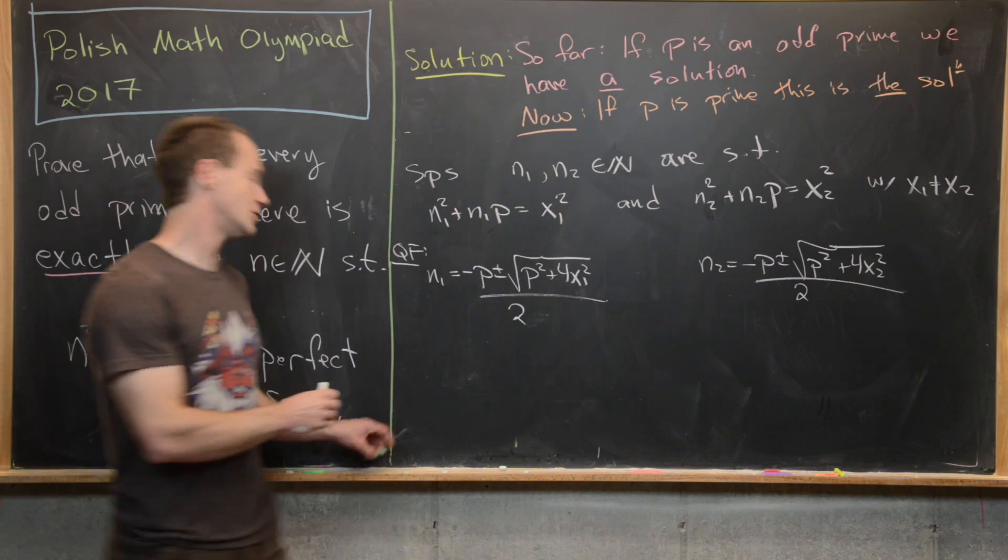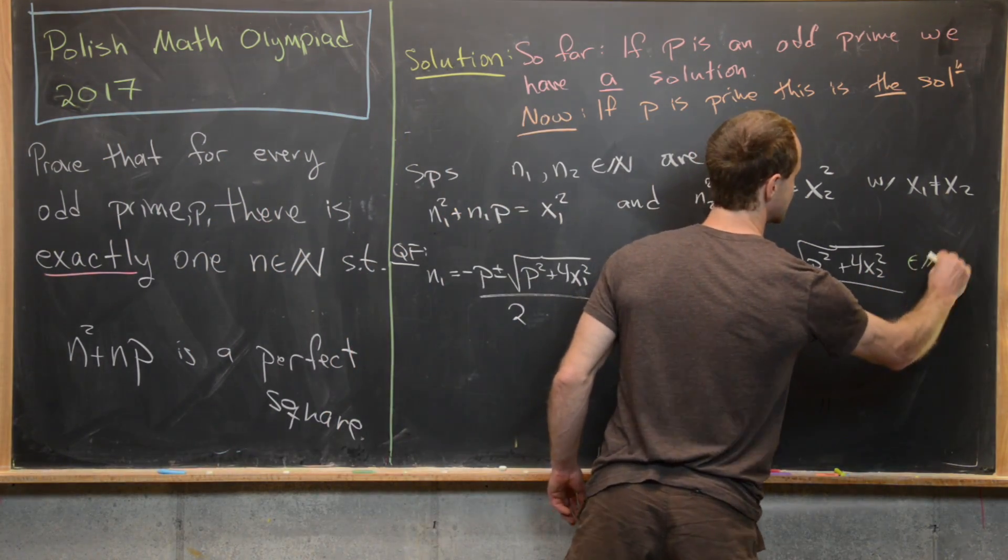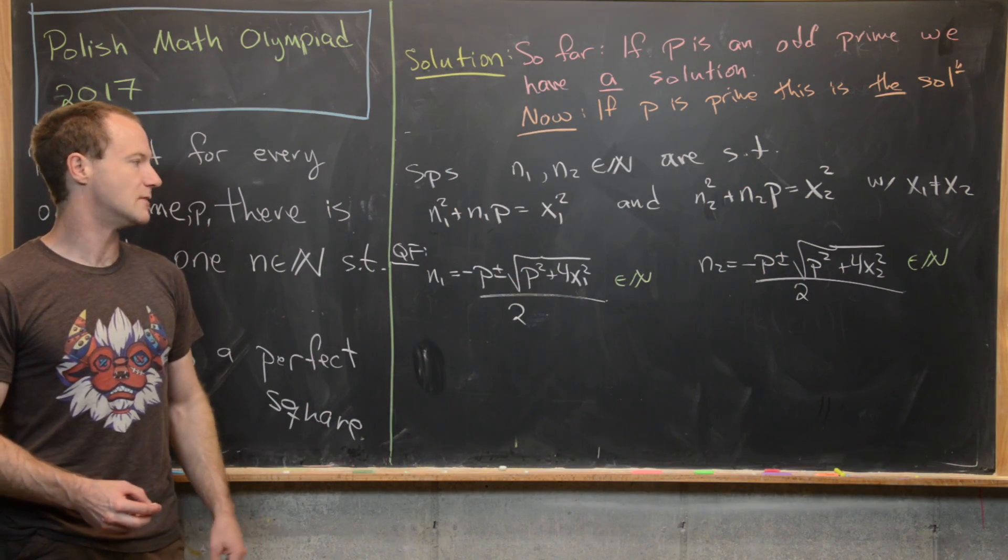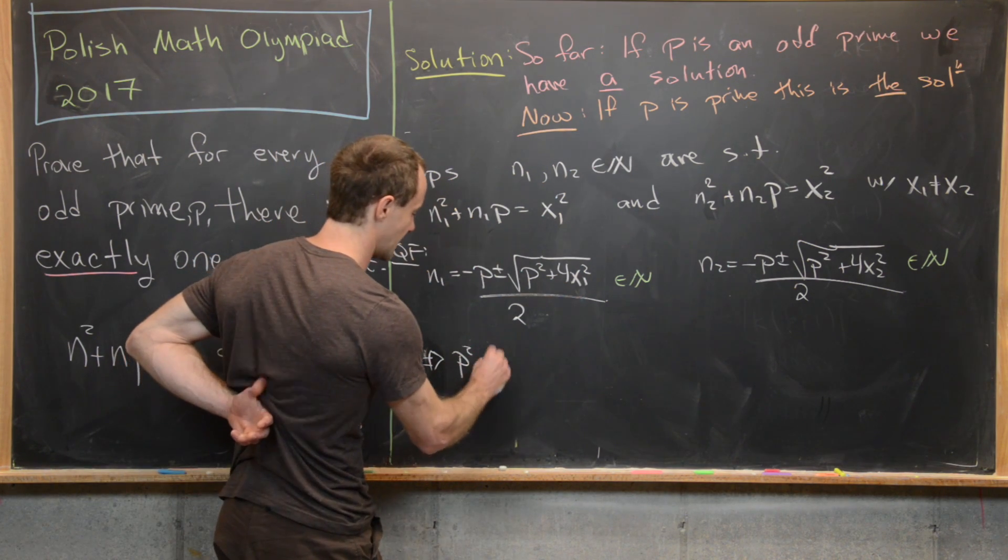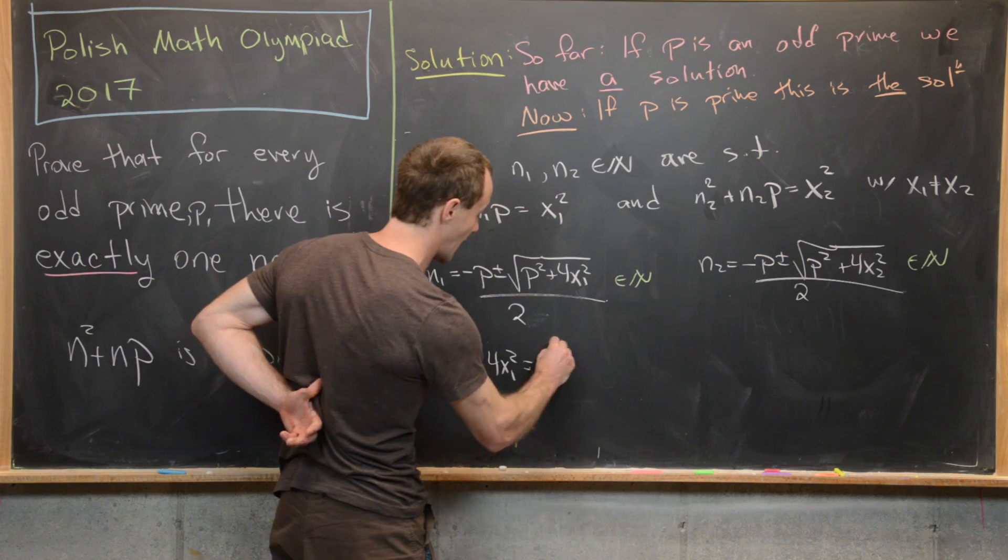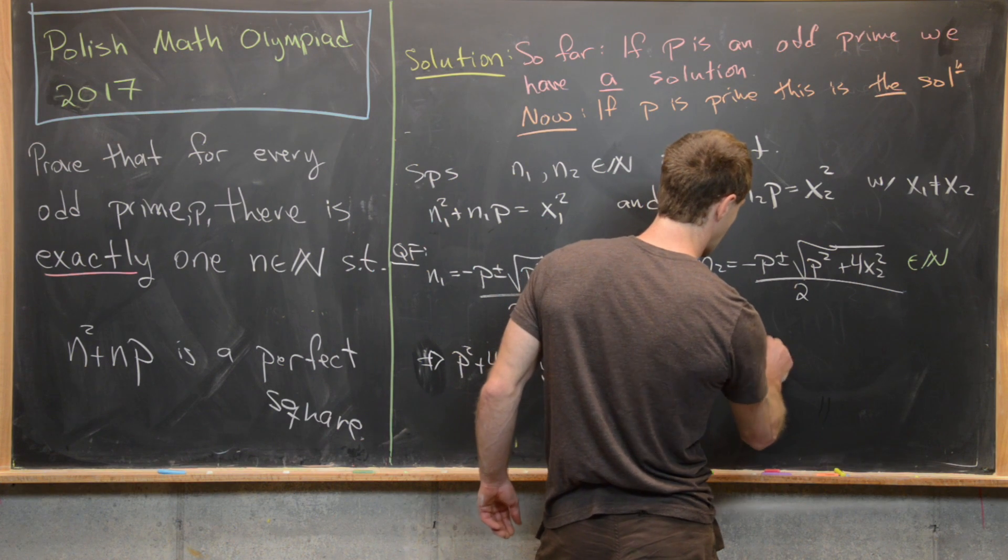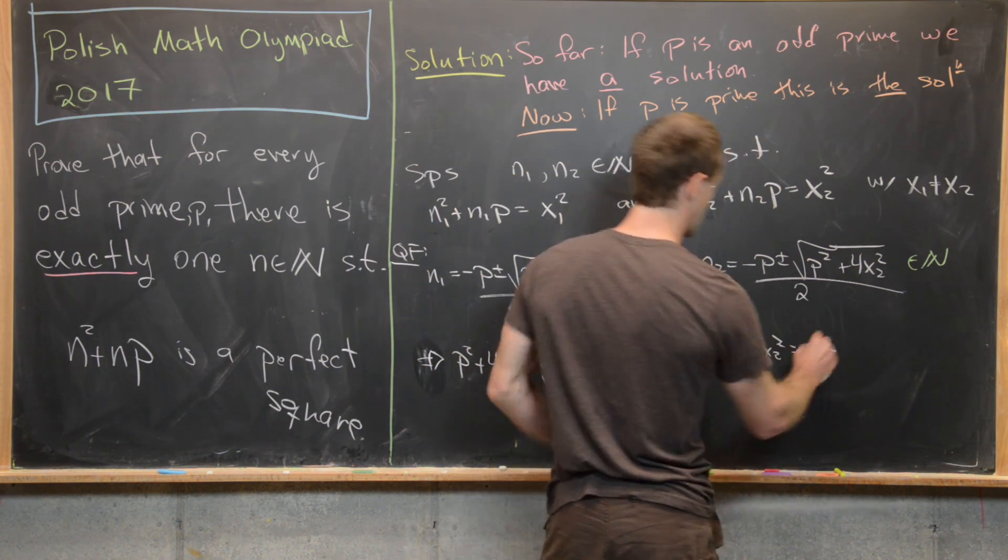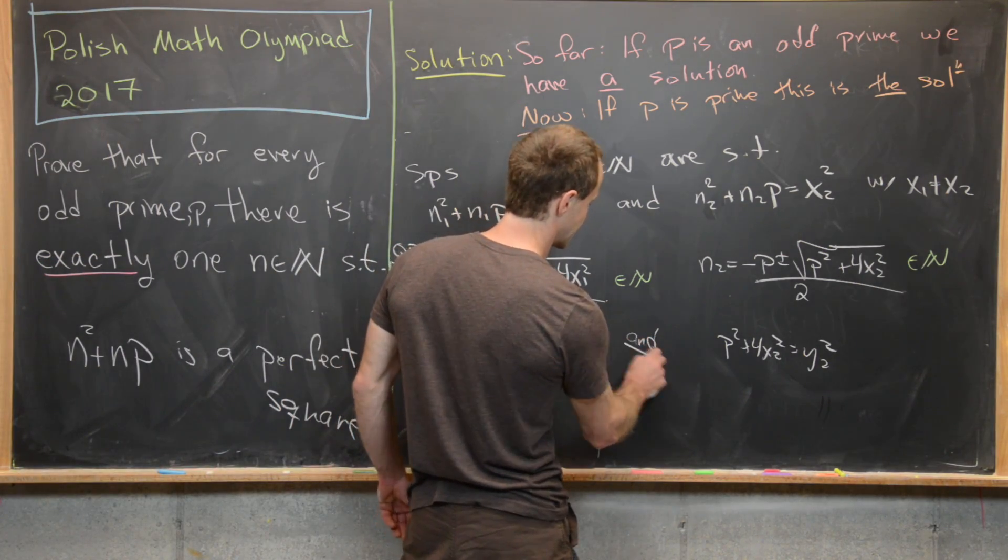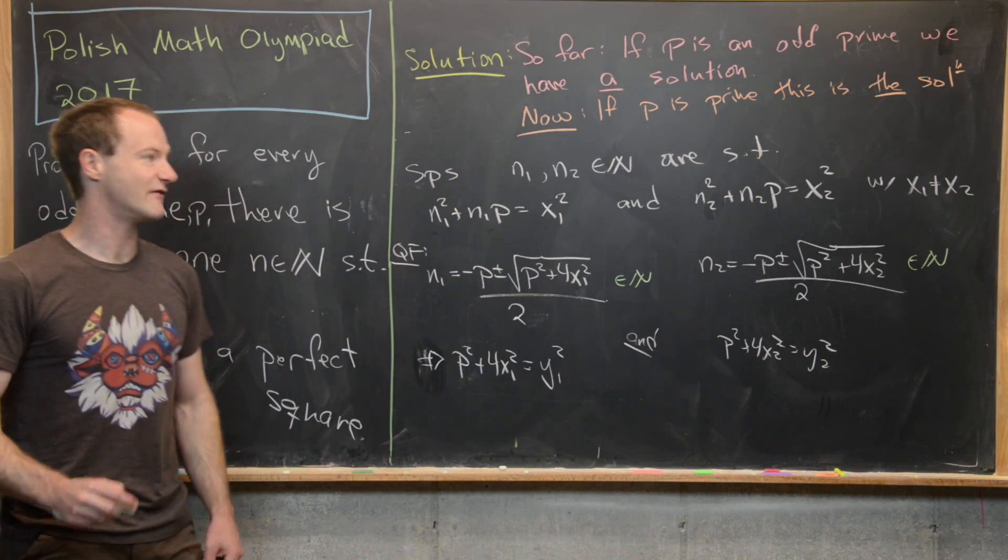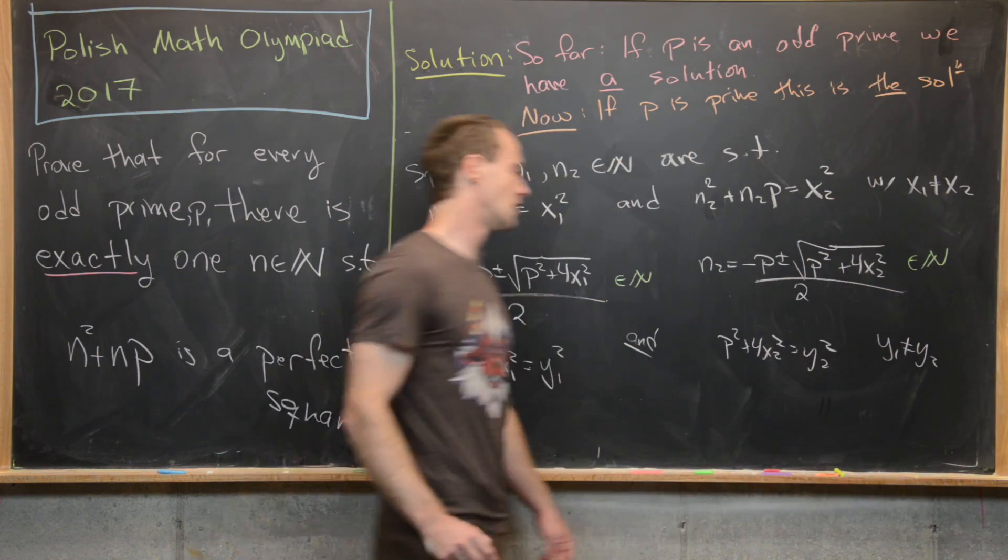But since n one and n two are both natural numbers, so this is a natural number and this is a natural number, we know the stuff under the square root must be a perfect square itself. So in other words, here we have p squared plus four x one squared equals y one squared—in other words, that stuff is a perfect square. And p squared plus four x two squared equals y two squared—in other words, that stuff is also a perfect square. So let's maybe put an and here. And then since up here we have x one not equal to x two, then we also have y one not equal to y two.